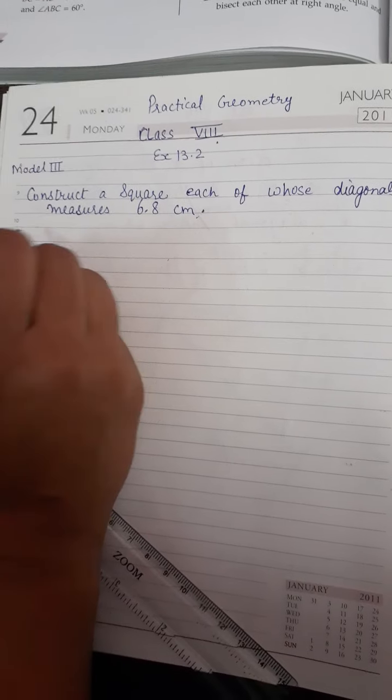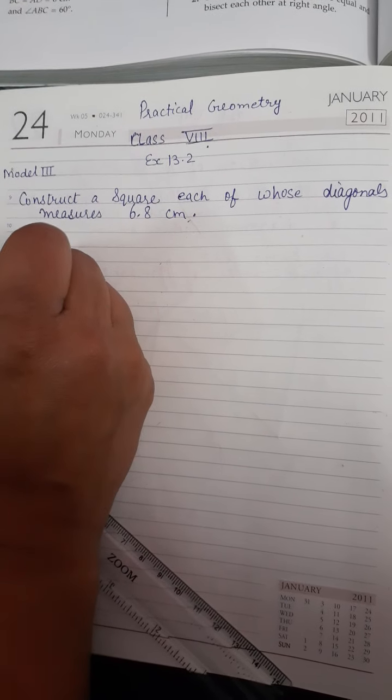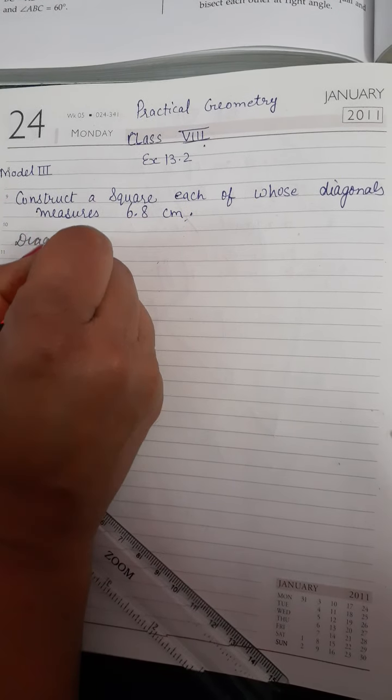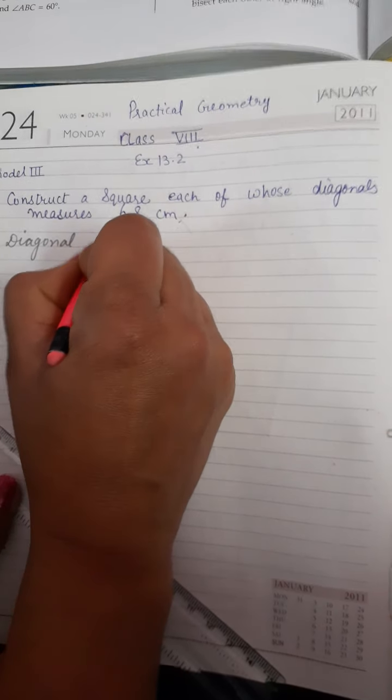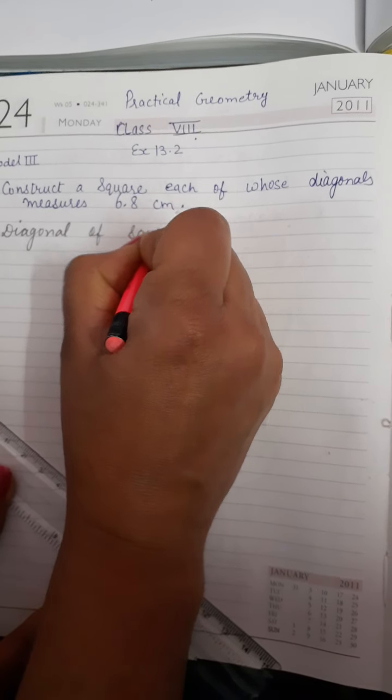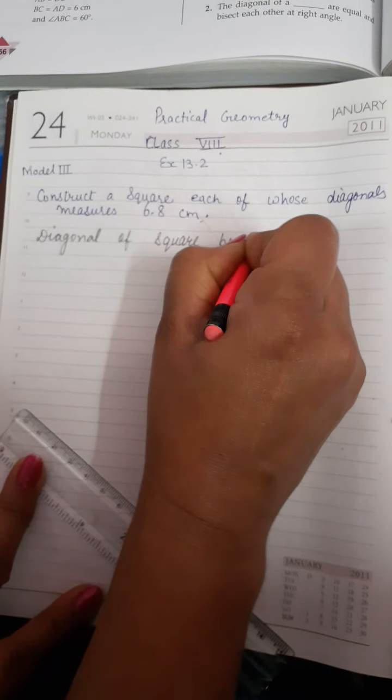So here we have two diagonals square. First of all, we have to know about the property: the diagonals of square bisect each other at 90 degree.